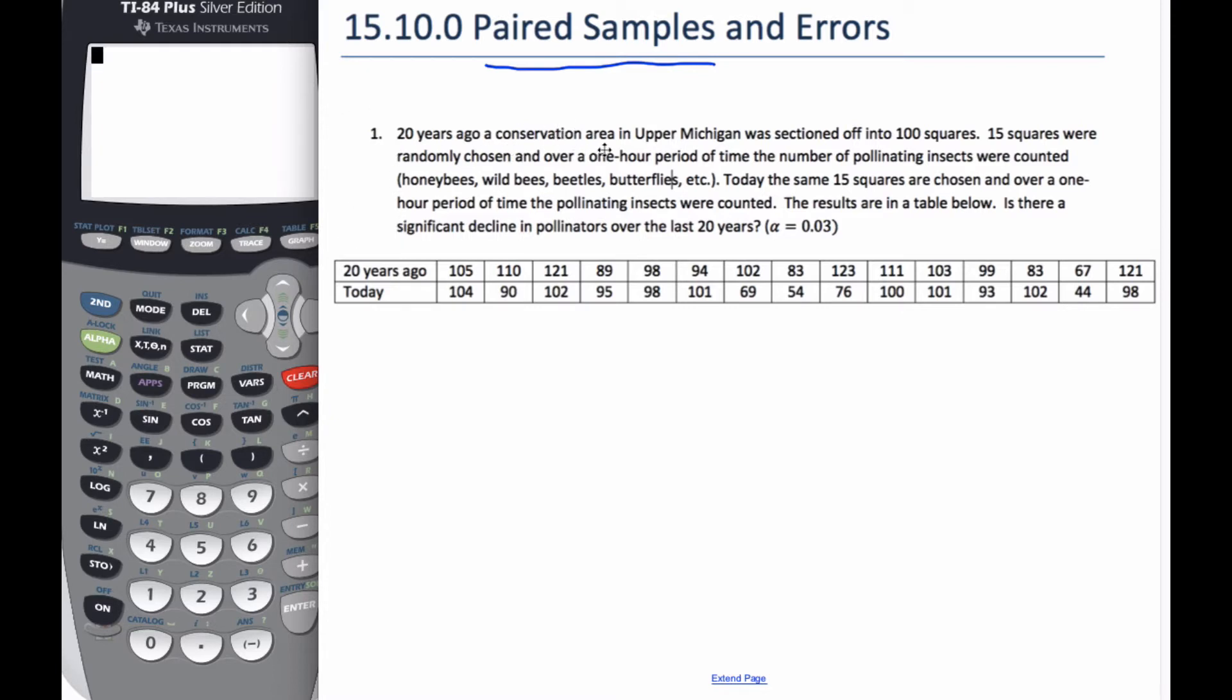20 years ago, a conservation area in Upper Michigan was selected, was sectioned off into 100 squares. 15 were randomly chosen, and over a one hour period of time, the number of pollinating insects were counted.